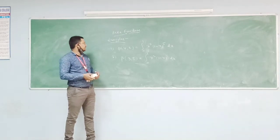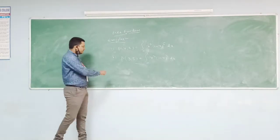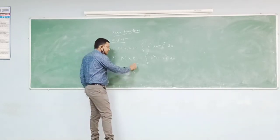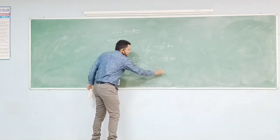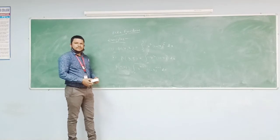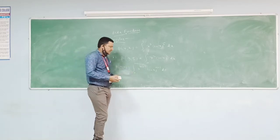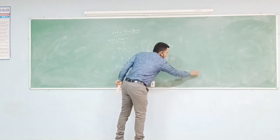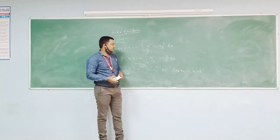Now we can take an example which is not a beta function. We have a condition: beta of m comma n is the integration of 0 to 1 of x power m minus 1 into 1 minus x whole power n minus 1 dx, and this beta function converges only for m greater than 0 and n greater than 0. The values of m and n must be greater than 0.